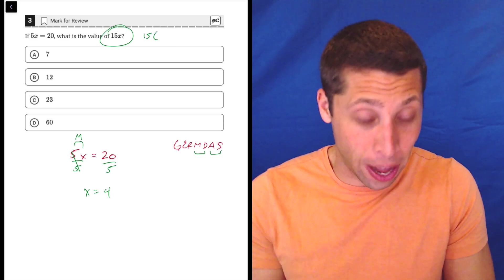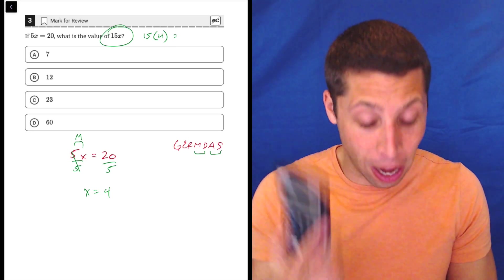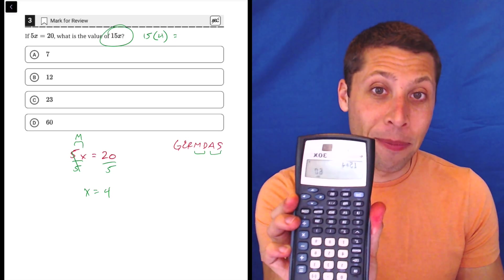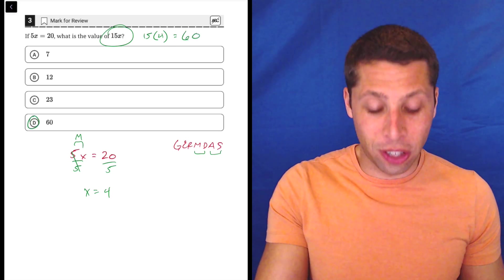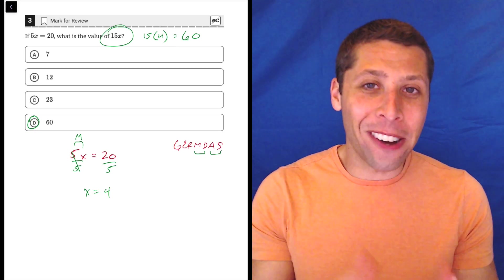Now it doesn't make it any harder. We just take 15 and then we put our x value, which is 4, into the equation. And 15 times 4, you can use your calculator if you want, 15 times 4 is 60. So there you go, that's the answer, that is the final answer of the question.